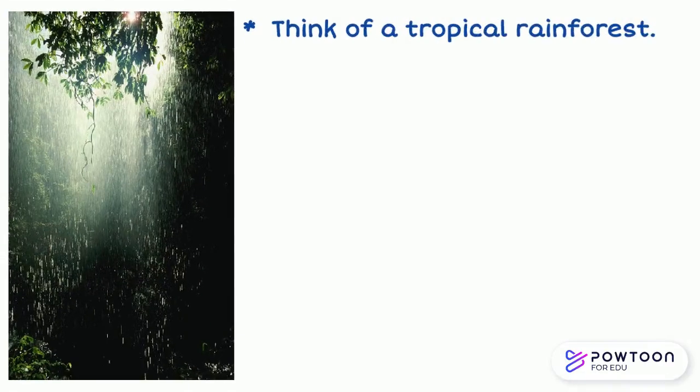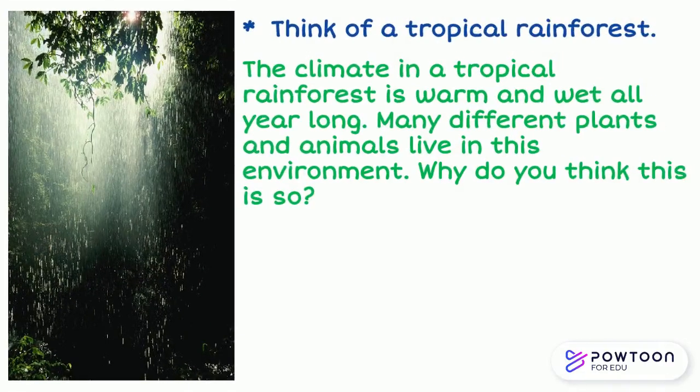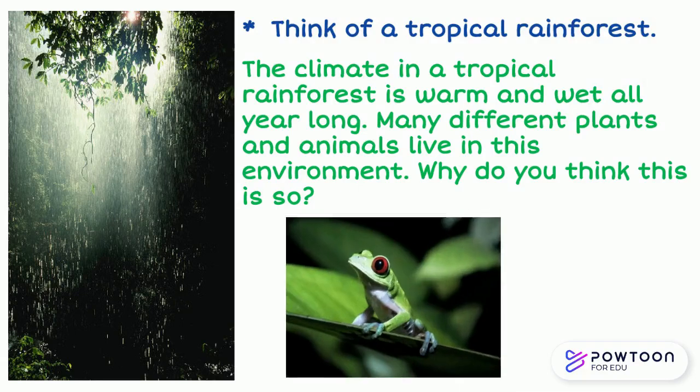Think of a tropical rainforest. The climate in a tropical rainforest is warm and wet all year long. Many different plants and animals live in this environment. Why do you think this is so?